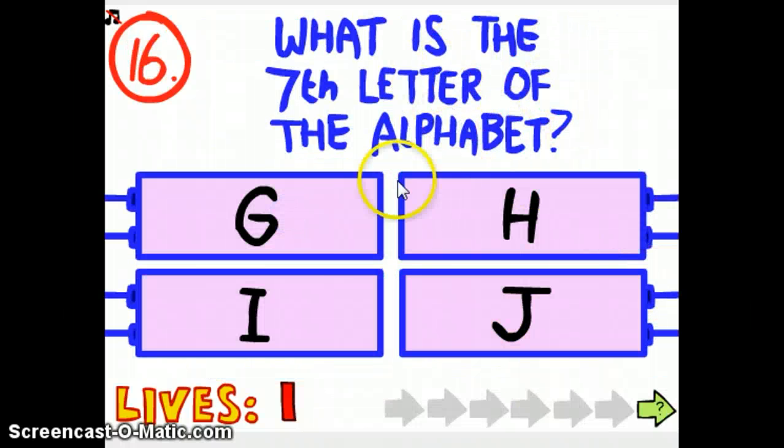What is the seventh letter of the alphabet? A, B, C, D, E. No, you just wrote here. One, two, three, four, five, six, seven. Wow, okay, fine. A, B, C, D, E, F, G. J.